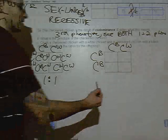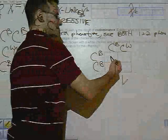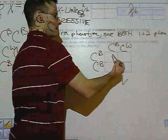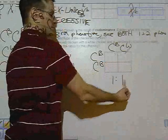So you're still going to get a one to one ratio. But you're going to have C^B C^B over here, C^B C^W over here. One to one black to checkered.